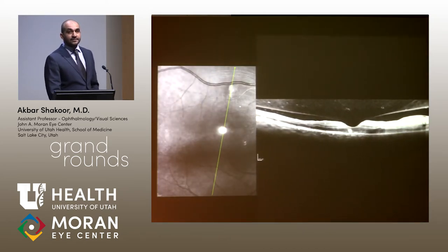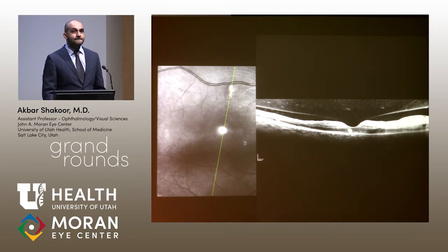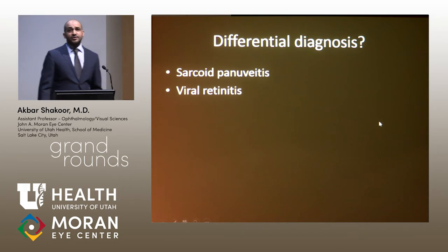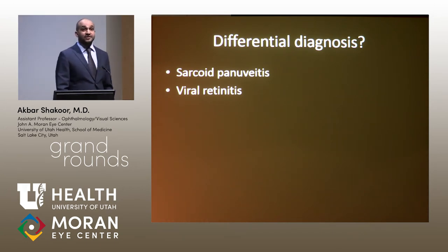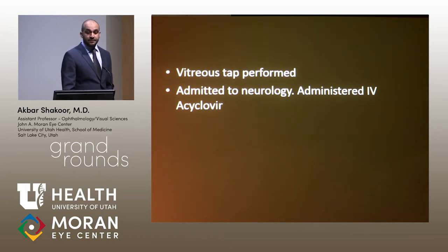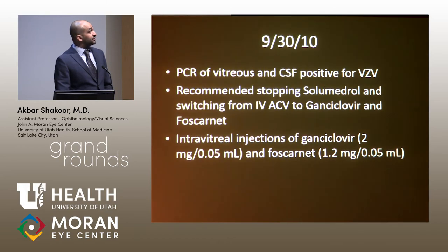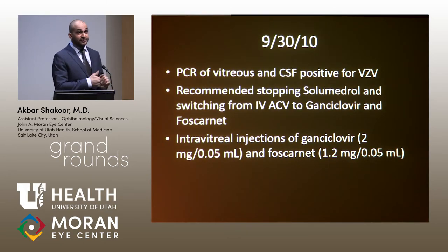On OCT, there was complete loss of retinal architecture in the inner retina. Could this be sarcoid pan-uveitis? That's unlikely on so much immunosuppression, and you certainly don't expect retinal whitening. Could it be viral retinitis? We performed a vitreous tap, admitted him to neurology for IV acyclovir, and a lumbar puncture was performed. PCR of his vitreous and CSF was positive for varicella zoster virus.